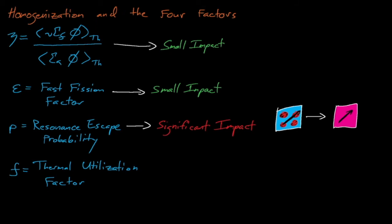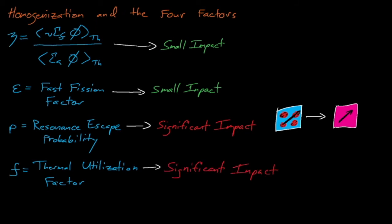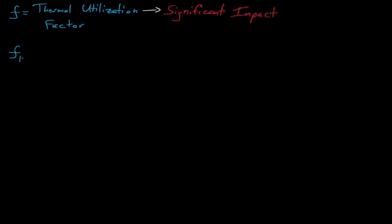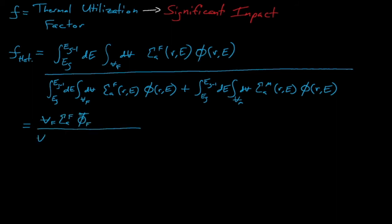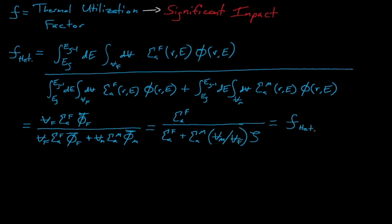Thus, the resonance escape probability is higher in heterogeneous systems and lower in homogeneous systems. Lastly, what about the thermal utilization factor? The thermal utilization factor, f, is the ratio of the number of thermal neutrons absorbed in the fuel to the number of thermal neutrons absorbed in the fuel and in the moderator, which we can express like this using our average fluxes and average cross-sections. If we divide both the numerator and denominator terms by the fuel volume and the fuel average fluxes,